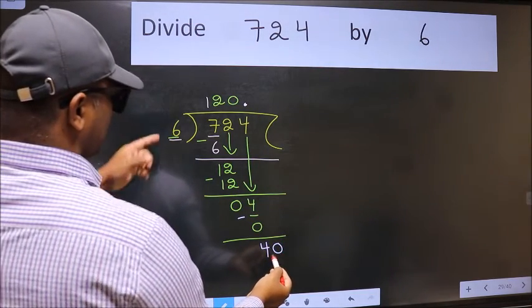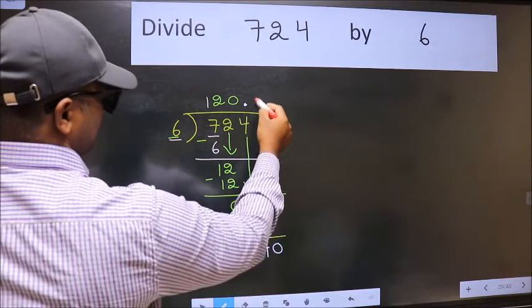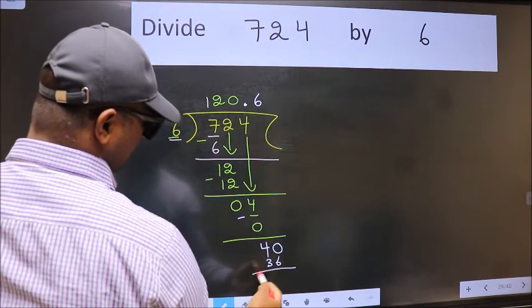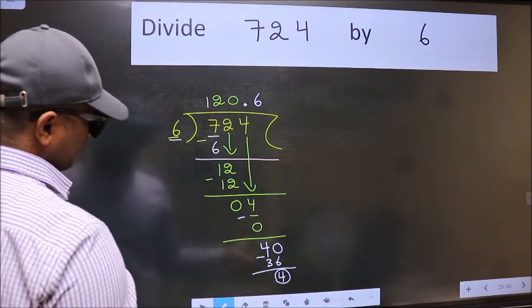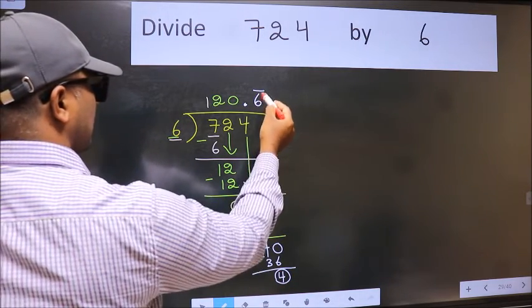So, 40. A number close to 40 in the 6 table is 6 times 6, which is 36. Now we subtract. We got 4 again, which means we get a bar on this number.